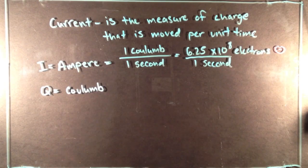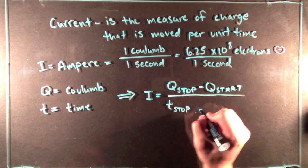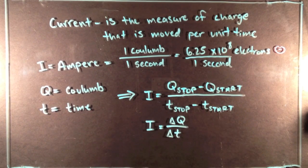Now, we use I to represent current, Q to represent coulombs, and T to represent seconds. So, current I just equals a change in Q over a change in T.